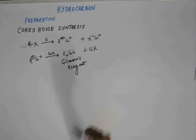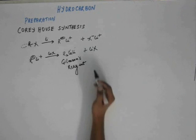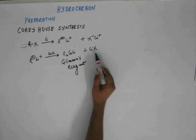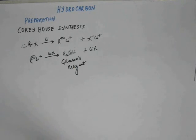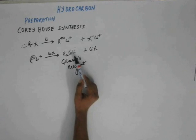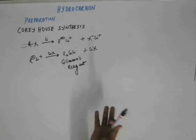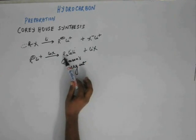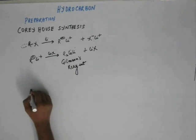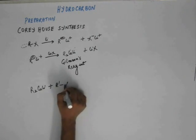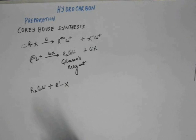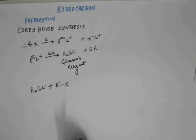Li⁺ is stable — it enjoys the noble gas configuration of helium. X⁻ is also stable. Cu⁺ has a pseudo noble gas configuration and is stable. Li⁺ is stable. The only reactive part in the system is R⁻. Now, suppose to this Gilman's reagent R₂CuLi we add R'X. R' can be anything, but it has to be a primary (1°) alkyl halide, or at most a secondary (2°) alkyl halide.